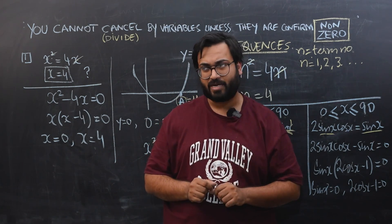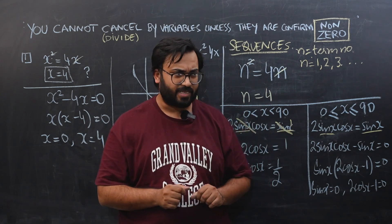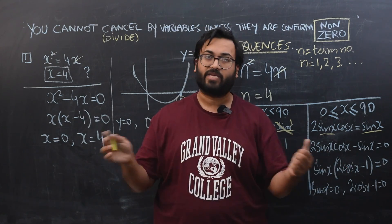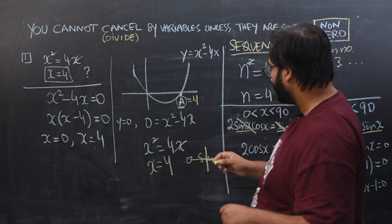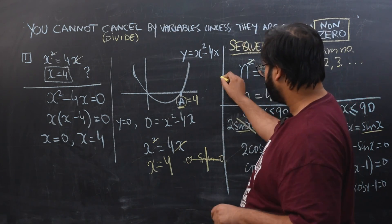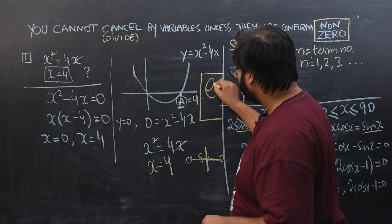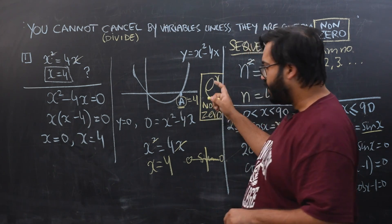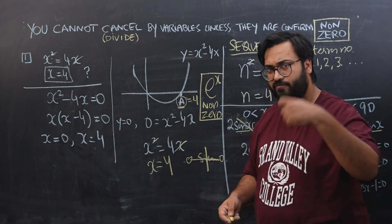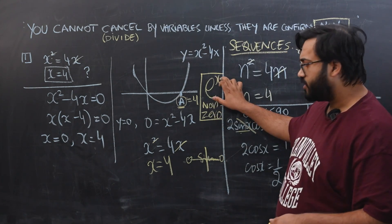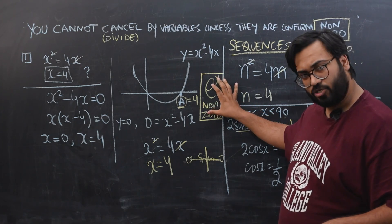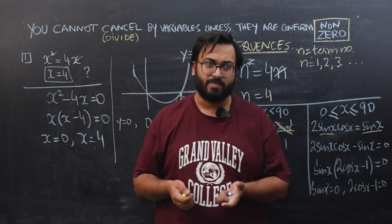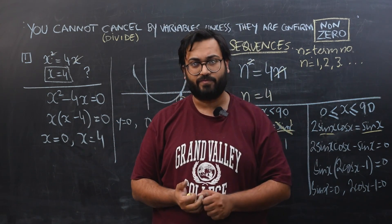Before I end, there is one additional point: some terms are universally never zero, so you can always safely cancel them. One such example — especially important for Paper 3 — is any exponential term: aˣ, 2ˣ, 5ˣ, eˣ. Any exponential term with a variable in the power is always non-zero. So whenever you are cancelling with an exponential term, you don't need to worry about this rule — you can comfortably cancel those.